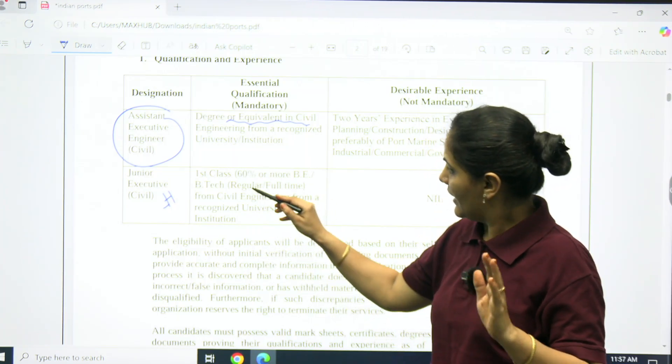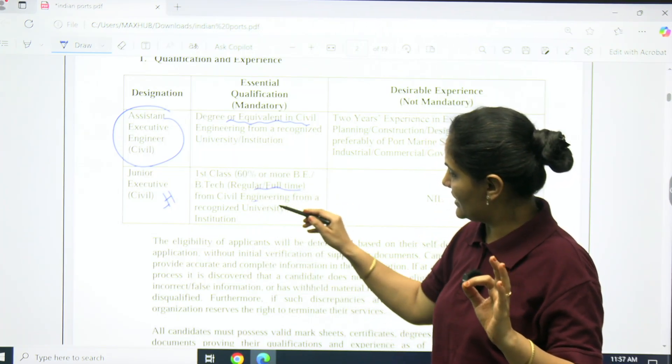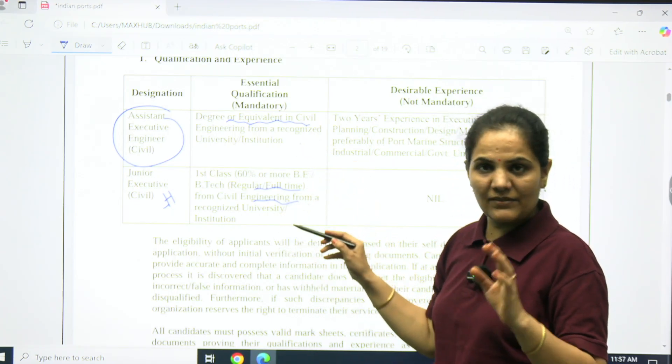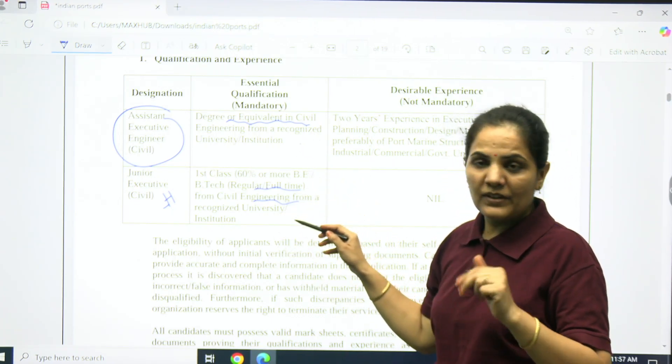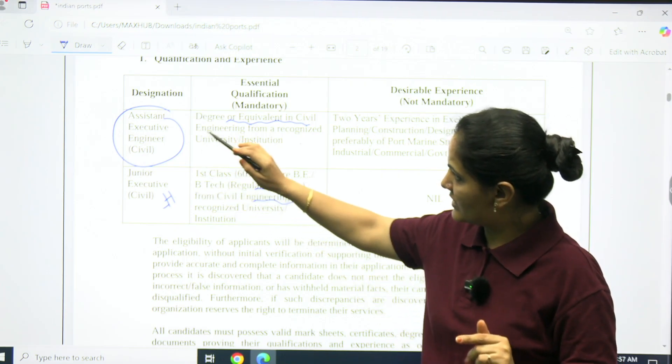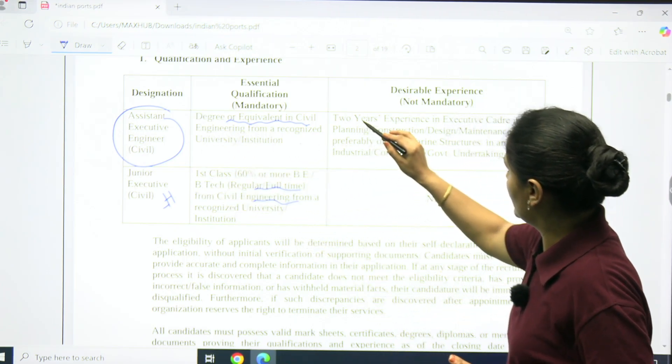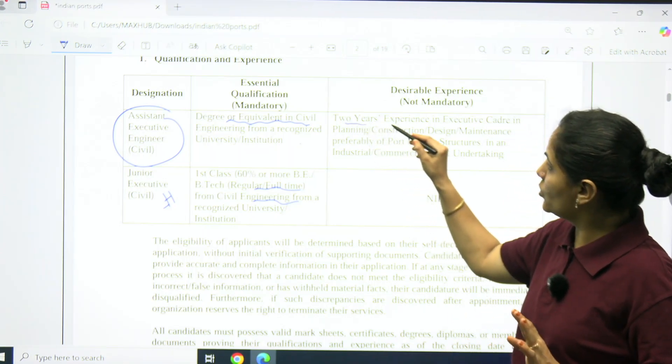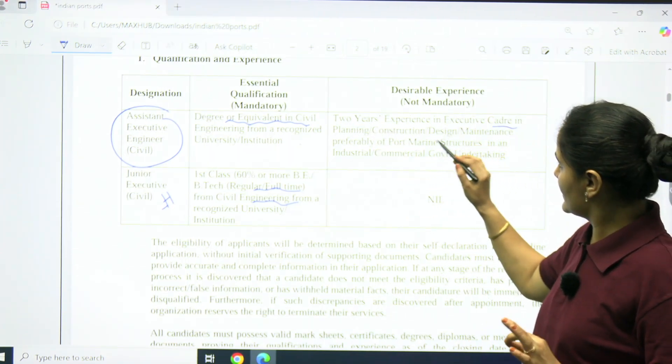For Junior Executive Civil, first class B.Tech with 60% marks, regular or full-time, in civil engineering from a recognized university. In both cases, if you are having degree or equivalent in civil, you are eligible. This is for Junior Executive and Assistant Executive.